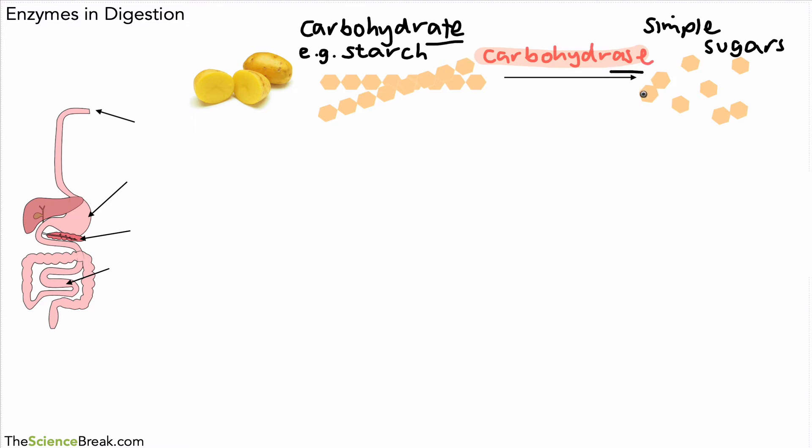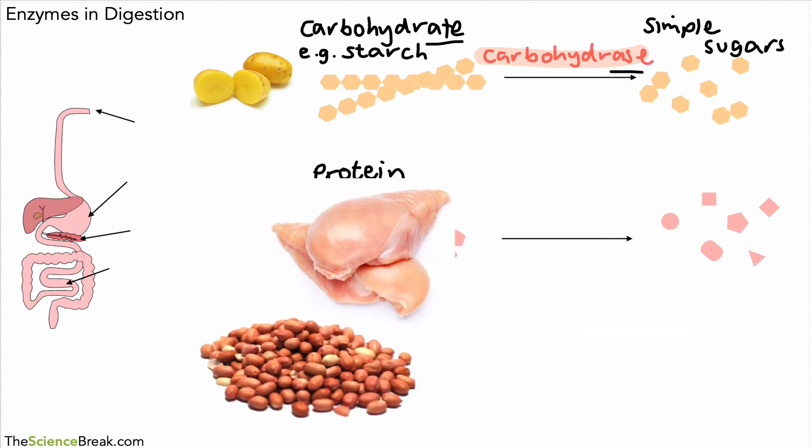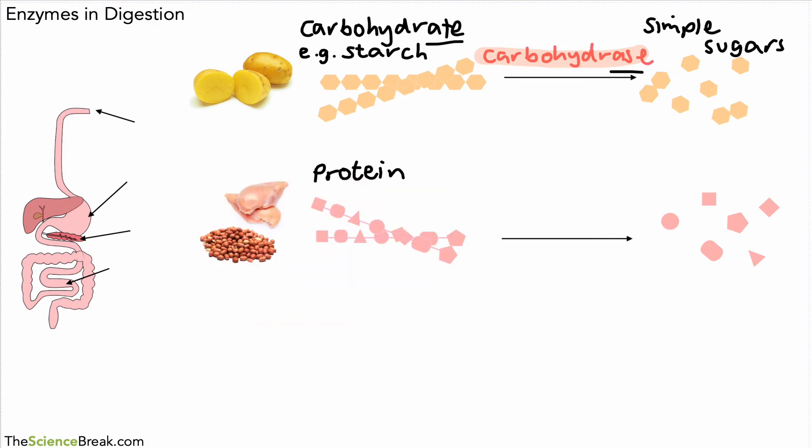Next we have the proteins, and examples of food with proteins are shown there. There's our protein chains. If we just look at one of the chains, it looks a bit similar to our carbohydrates, but the actual individual parts are different shapes. These are broken down also by enzymes, but these are called protease enzymes. That will break down the proteins into smaller units called amino acids, a very important key term that you should know. Proteins broken down by protease enzymes into amino acids.